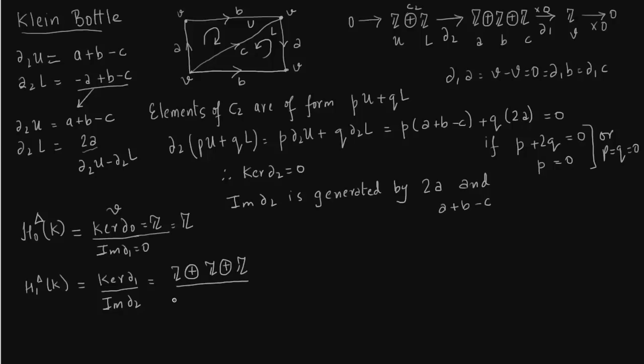Yeah, and we will change the basis of kernel of delta 1 from A, B, C. We will fix A and B and then instead of the third coefficient being C, we will take it as a linear combination.